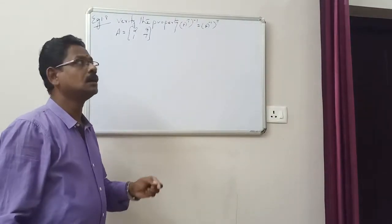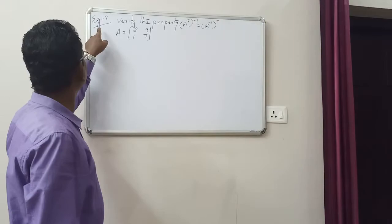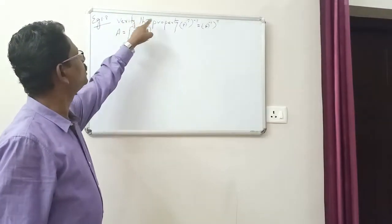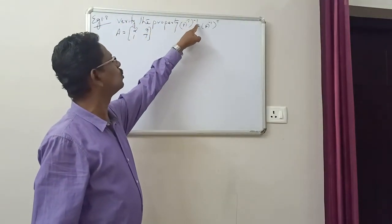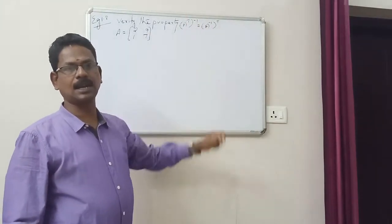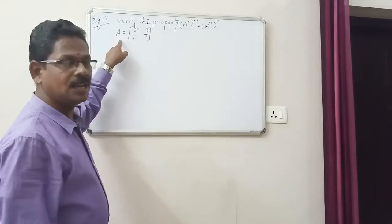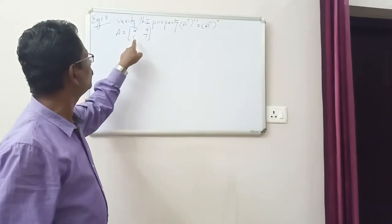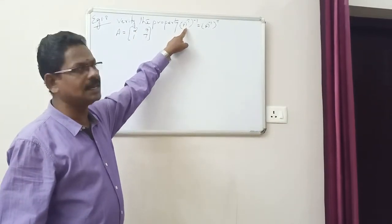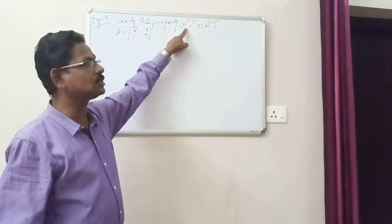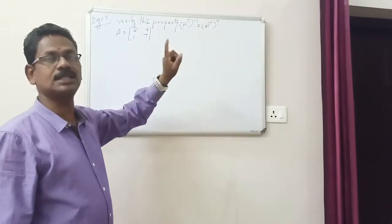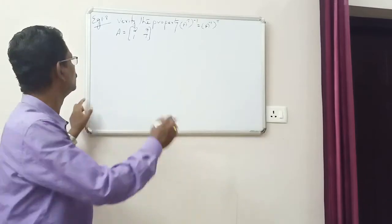Hi friends. Example 1.8: Verify the property A transpose the whole inverse equals A inverse the whole transpose, with A equal to [[2, 9], [1, 7]]. First, LHS is equal to A transpose the whole inverse. So first, let's find A transpose.